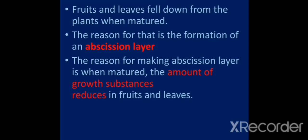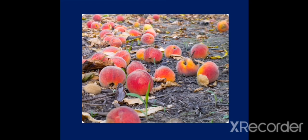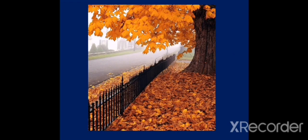Fruits and leaves fall down from the plants when matured. We know that matured fruits and leaves are falling down from plants. The reason for that is the formation of an abscission layer. The reason for making abscission layer is when matured, the amount of growth substances reduces in fruits and leaves. Okay, these are some fruits fallen down. These are some leaves fallen down.